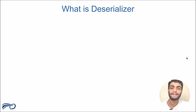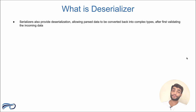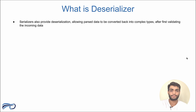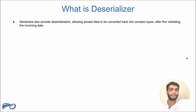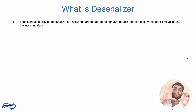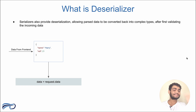The serializer also provides deserialization. We have seen how we pass data from our application to another application or the frontend. But it can also work the other way — we can receive data from the frontend or another application. For that, the serializer provides the functionality of deserialization, allowing us to take parsed incoming data and convert it back into the complex type, then edit it and store it in our database.